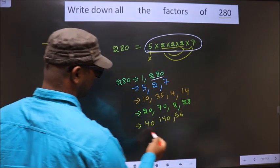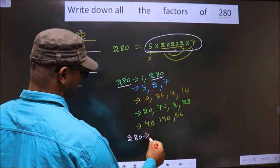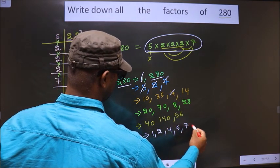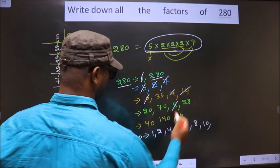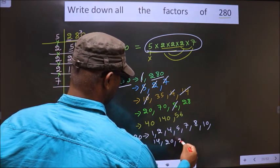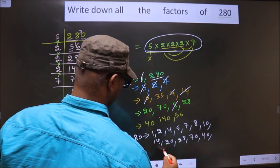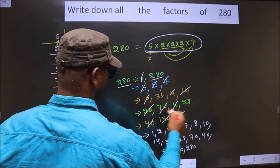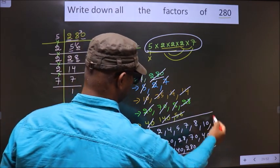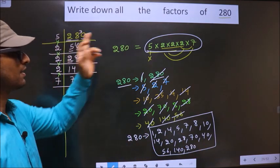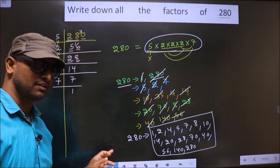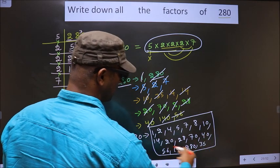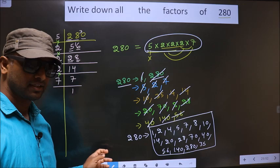Thus these are all the factors of 280: 1, 2, 4, 5, 7, 8, 10, 14, 20, 28, 35, 40, 56, 70, 140, and finally 280. Note: 35 was initially missed, so add 35 to the list. So these are all the factors of 280.